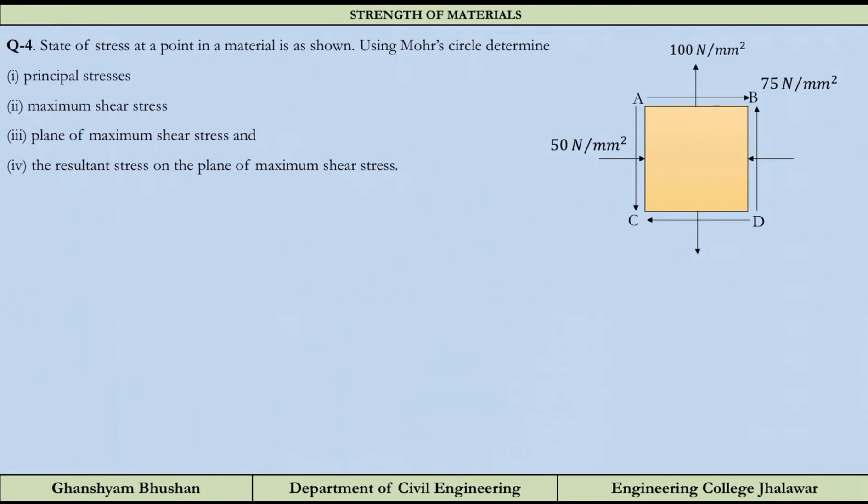The state of stress at a point in a material is as shown, so sigma_x, sigma_y, and tau_xy are given. Using Mohr's circle, determine the principal stresses, maximum shear stress, plane of maximum shear stress, and the resultant stress on the plane of maximum shear stress. These four parameters we have to find.